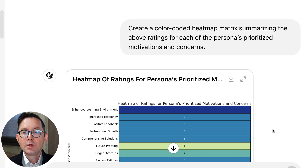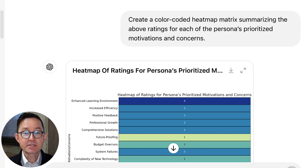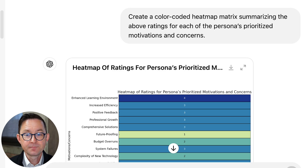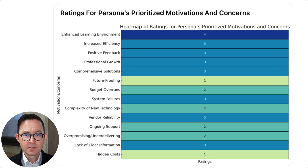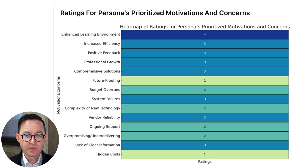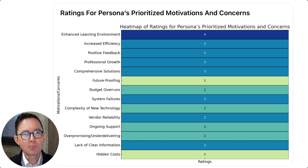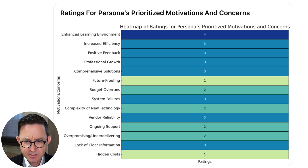Modern LLMs can do this, which is fun. Let's have it draw us a little heat map matrix. Create a color-coded heat map matrix summarizing the above ratings of the persona's prioritized motivations and concerns. Zooming in on this — super interesting. You can see we did a better job of addressing some of their concerns than others. Those two big ones — hidden costs and future proofing — this could be a better, stronger, more confidence-building page with a higher conversion rate if we just go deeper into those topics, as well as some of these two-out-of-fives: ongoing support, complexity of technology, budget overruns. Makes perfect sense.